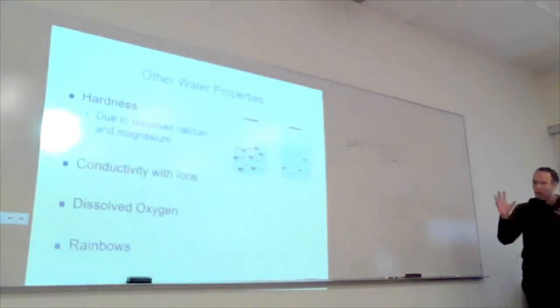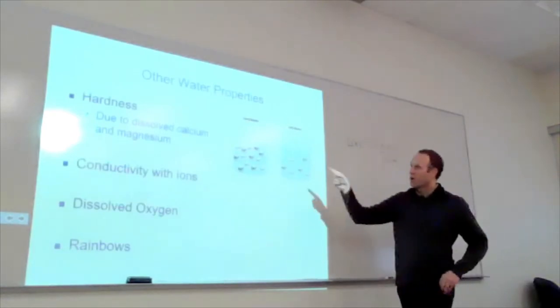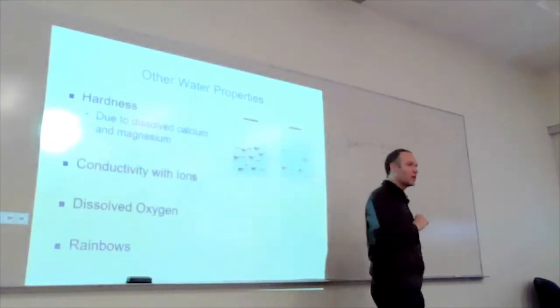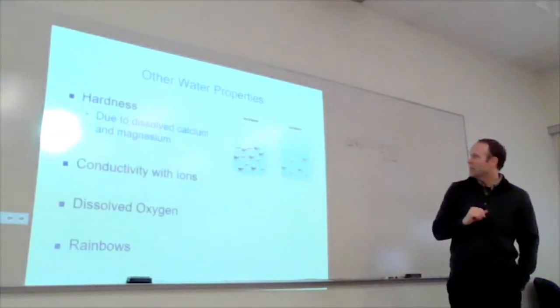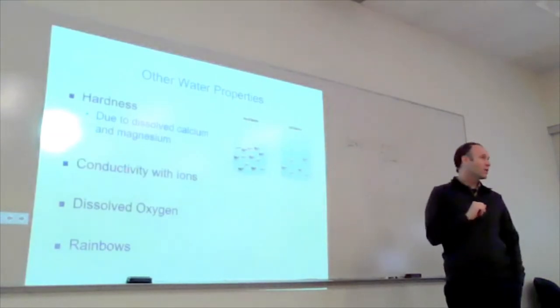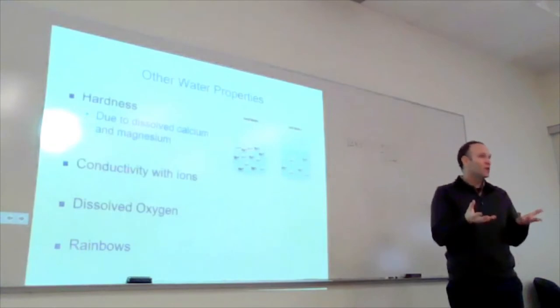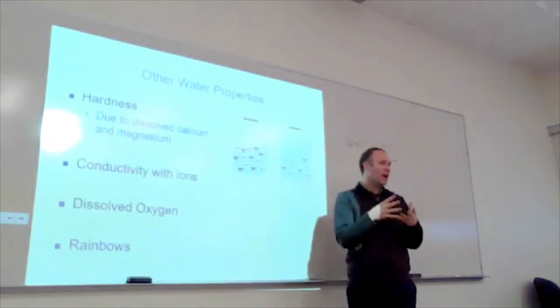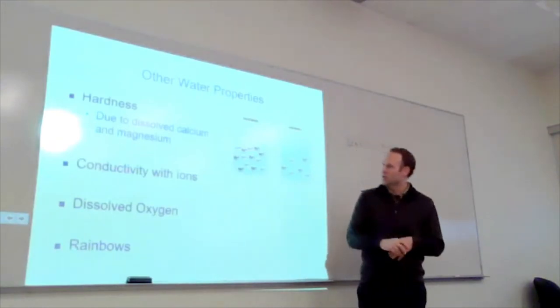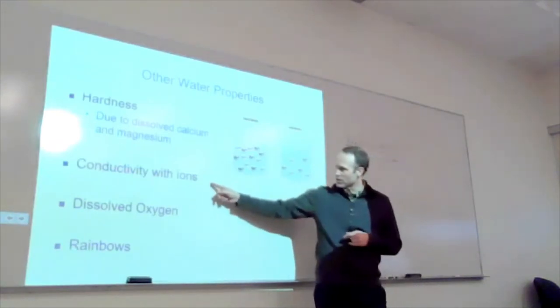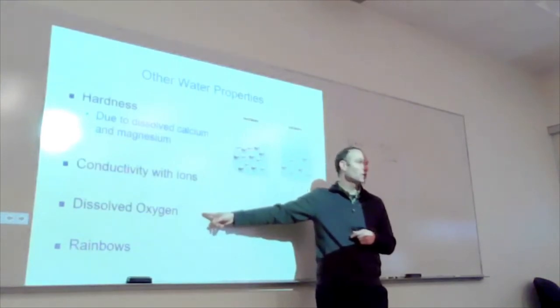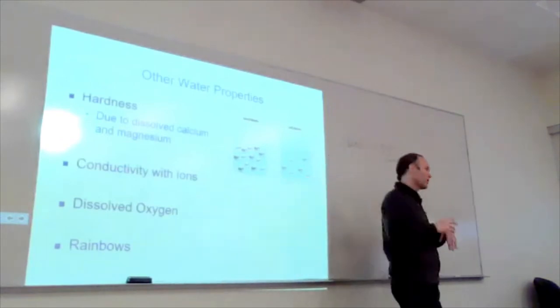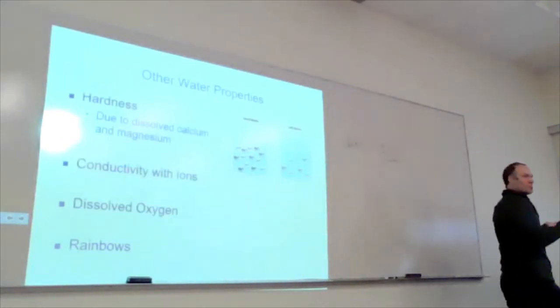There's other water properties we are going to talk about. We're going to talk about water hardness, the amount of calcium, magnesium, and sometimes other divalent ions that are in there. That will cause scaling on your pipes. Sometimes it affects the taste of the water and how your shampoo emulsifies. We're going to talk a little bit about conductivity. Obviously oxygen is important for biological things. And water can do other things like form rainbows, which we're not going to talk about this course, but it's kind of cool.